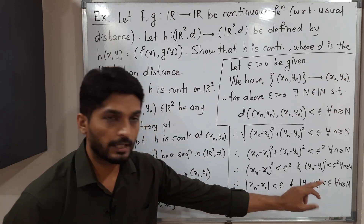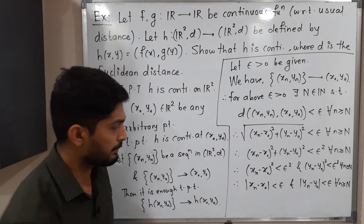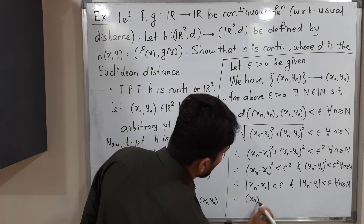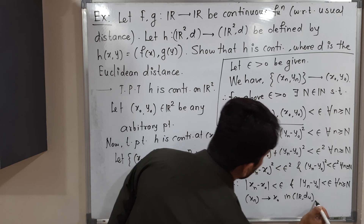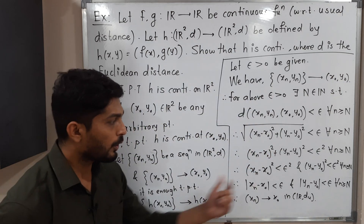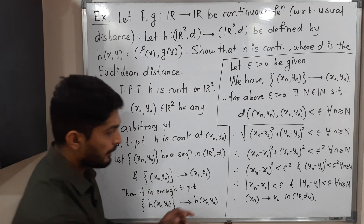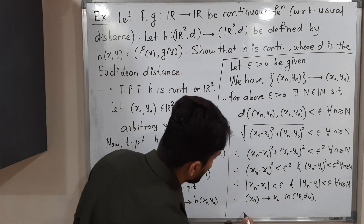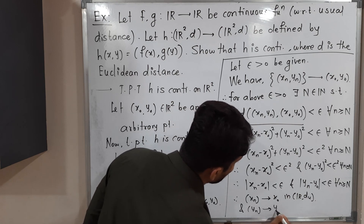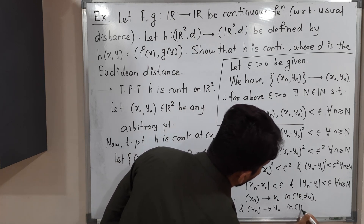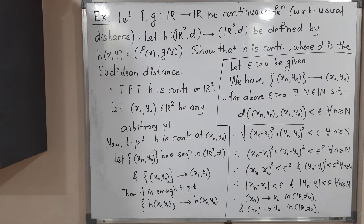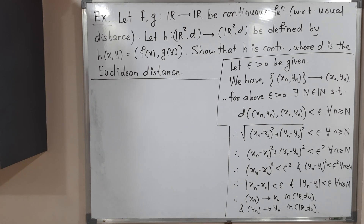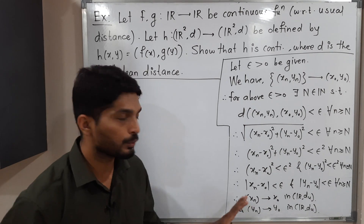By the definition of convergent sequences in (ℝ, d_usual), we get that xn converges to x₀ in (ℝ, d_usual), and similarly yn converges to y₀ in (ℝ, d_usual). So we have obtained two convergent sequences xn and yn. We have reached this step, but we still haven't used the important given information.